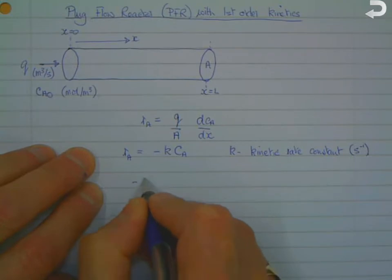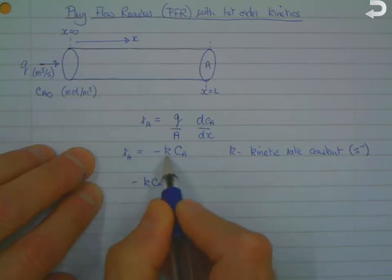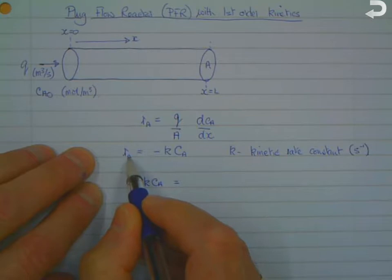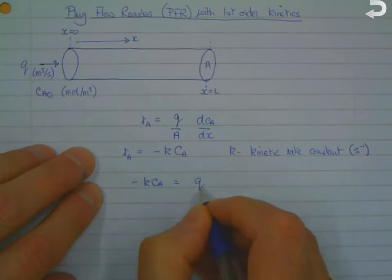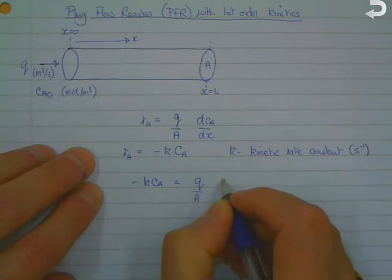So we can put that in the above equation. RA is minus K times CA because A is the starting material which is being consumed, so it's a negative term. And we've got minus K CA is equal to Q over A times dCA by dx.